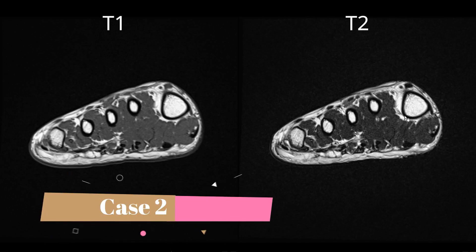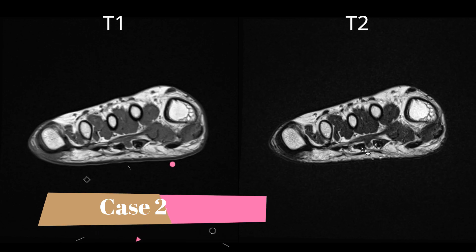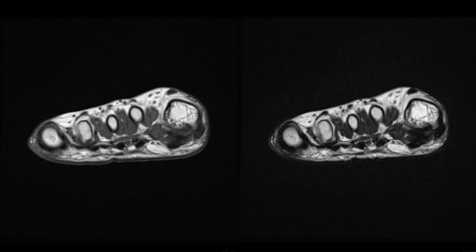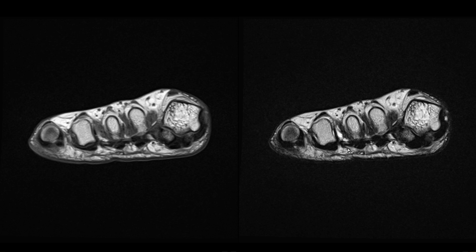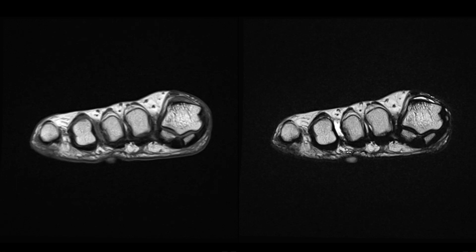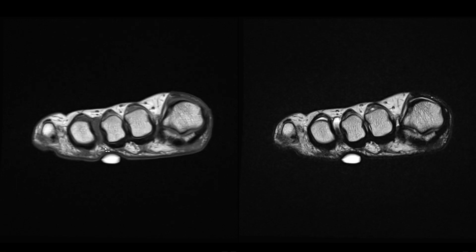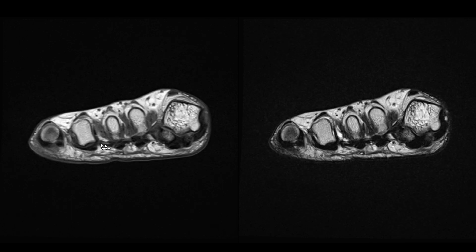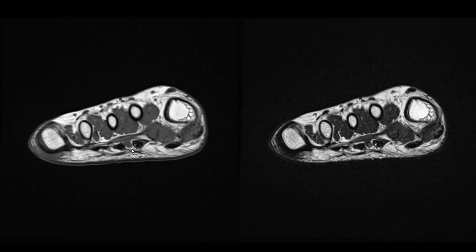This is a really nice example of the anatomy. Let's start by identifying the neurovascular bundles between the flexor tendons. You can also see the deep transverse metatarsal ligament at some spaces here. Now let's focus on the second and third intermetatarsal space.